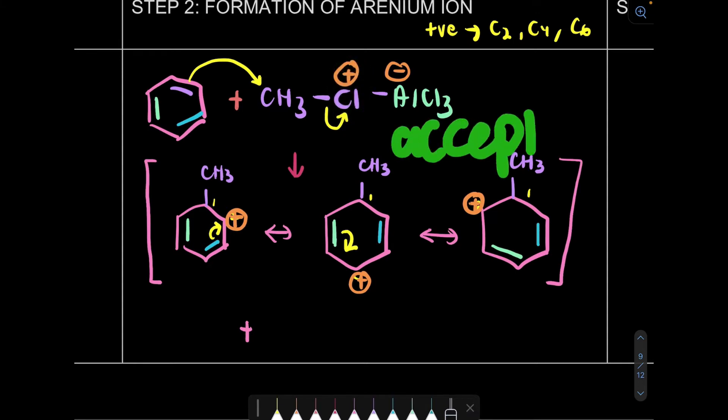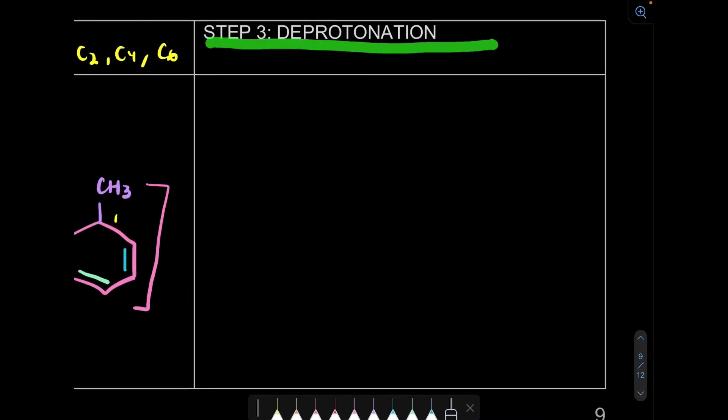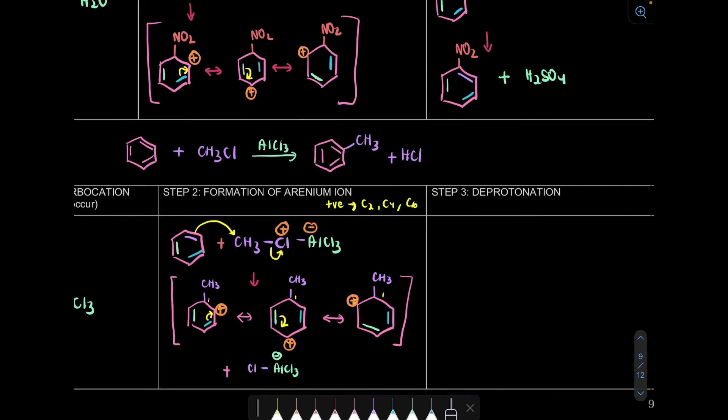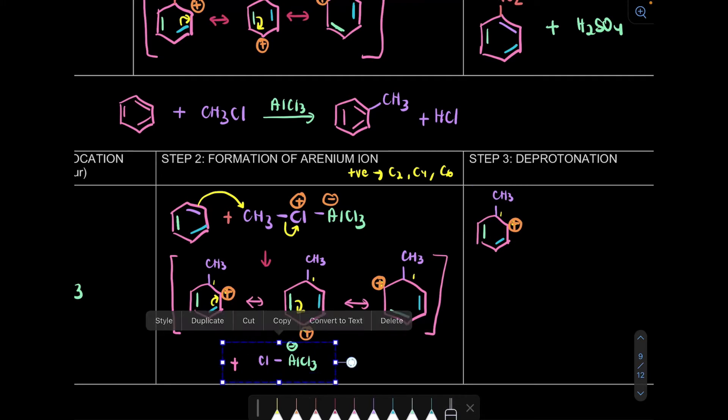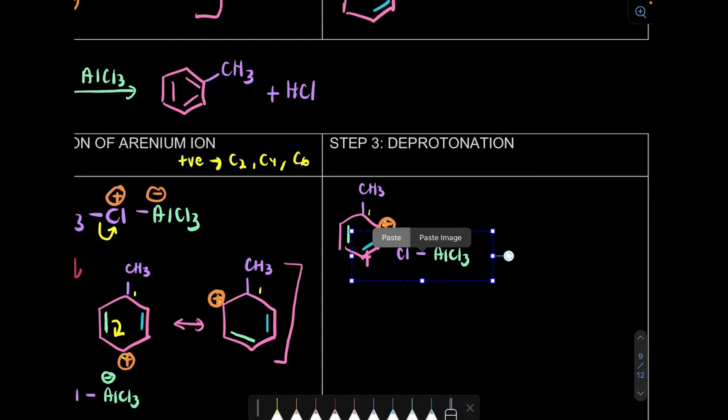Our by-product here, chlorine was positive charge but accepted electrons so it's negative charge, so it's neutral now. Plus AlCl3 maintains, no donation or acceptance. Last step is step 3, deprotonation. Deprotonation means we're going to lose hydrogen. So lose hydrogen, I'm going to take the first resonance structure. I'm going to react it with my by-product.